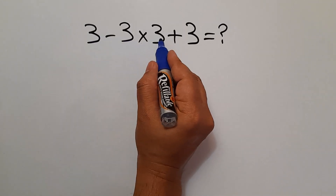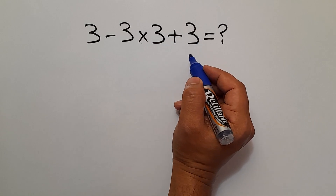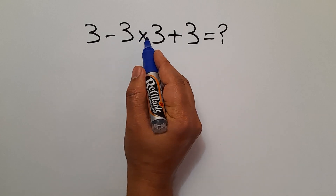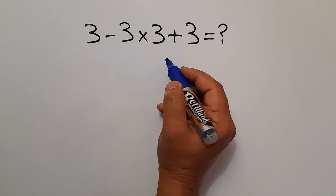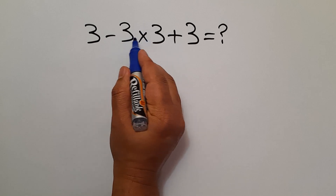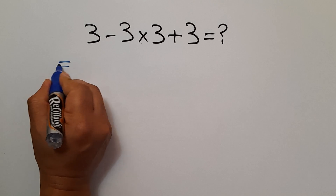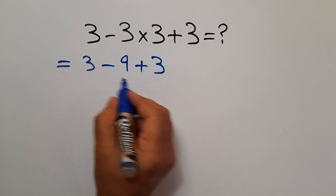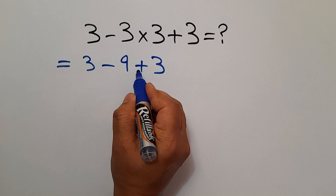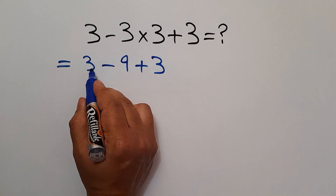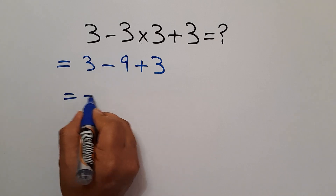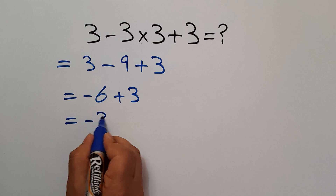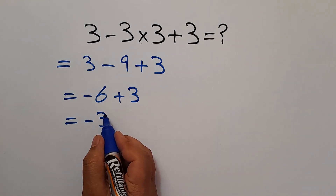Our next problem is: 3 minus 3 times 3 plus 3. Are you ready to solve? Let's go ahead and get started. According to the order of operations, multiplication has higher priority than subtraction and addition. So first 3 times 3 gives us 9. Now we have 3 minus 9 plus 3. Subtraction and addition have equal priority so we work left to right: 3 minus 9 gives us negative 6, and negative 6 plus 3 equals negative 3. Our final answer is negative 3.